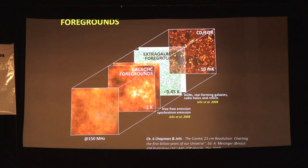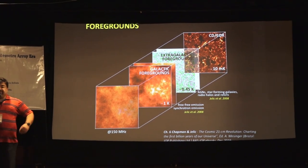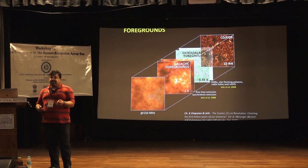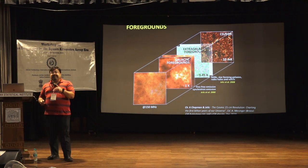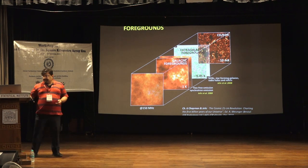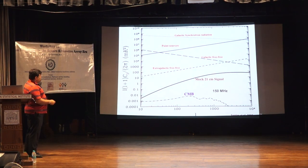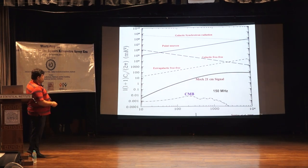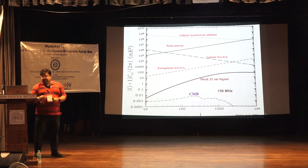All foregrounds are a few orders of magnitude brighter than the signal. So if you make any calibration error, that error is multiplied by the source brightness in the foreground. Even a one percent calibration error applied to a very bright foreground can still be higher than the background signal. The angular power spectrum shows galactic synchrotron radiation, extragalactic point sources, galactic free-free, and extragalactic free-free — and our signal is many orders of magnitude lower than all of these.